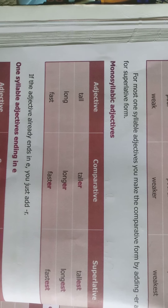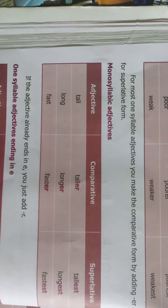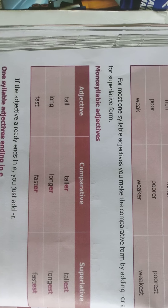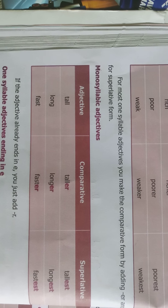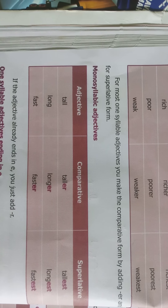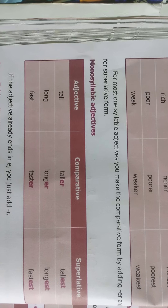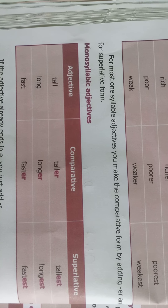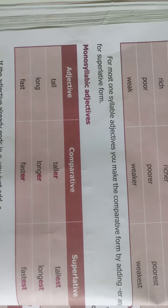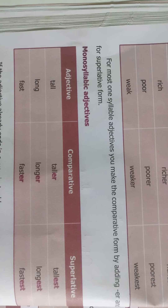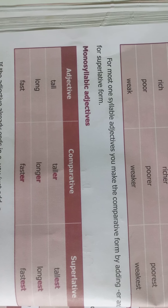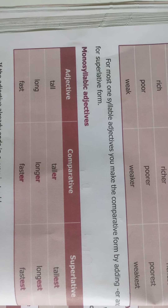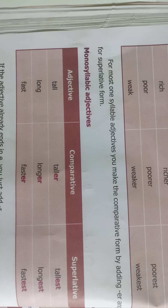These are monosyllabic adjectives — that means one syllable adjectives. We add 'er' to the adjective to make it comparative and 'est' to make it superlative. Examples: tall, taller, tallest; long, longer, longest; fast, faster, fastest.